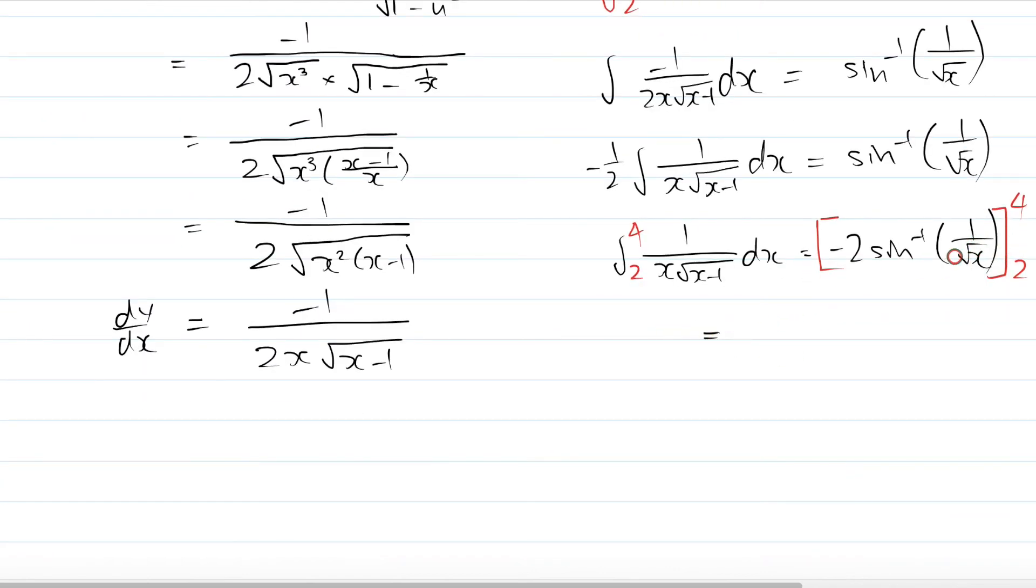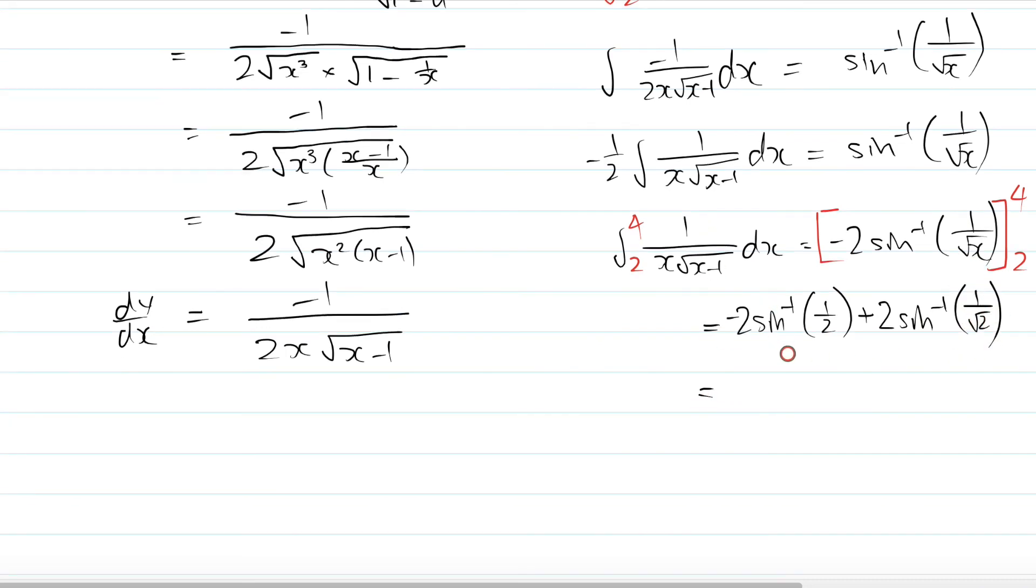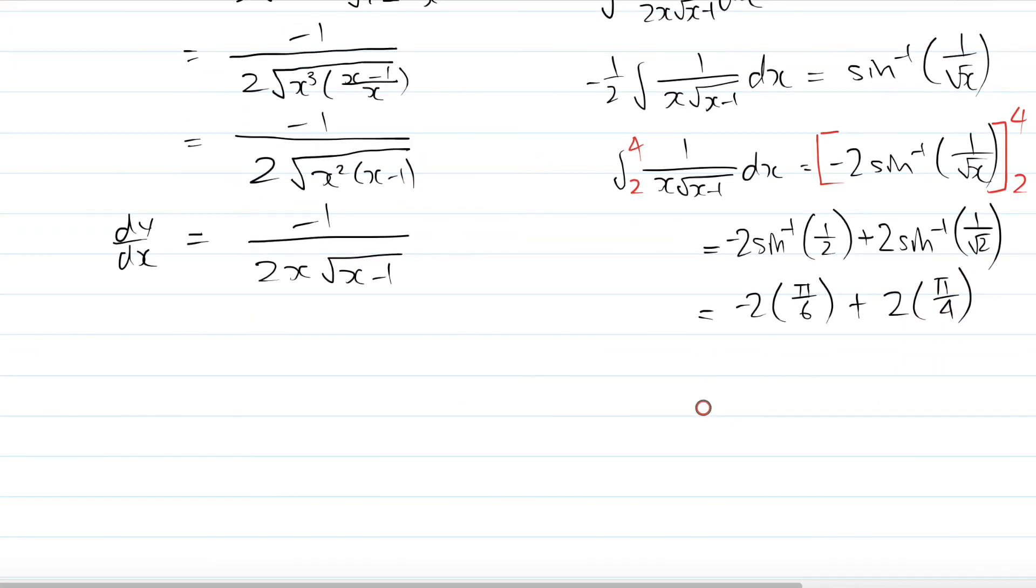If we sub in 4 into our function right here, negative 2 sine inverse, 1 divided by square root 4. Square root 4 is 2, so that's 1 on 2. Minus. So we have a minus sign, but then there's also a minus, so it becomes positive. 2 sine inverse. You sub in 2 over here, you get 1 on square root 2. What is sine inverse of a half? That is π on 6. And what is sine inverse of 1 on square root 2? That is π on 4. And you just multiply that in. You get negative π on 3 plus π on 2, which gives you the final answer of π on 6.